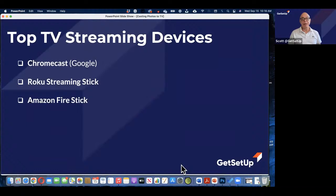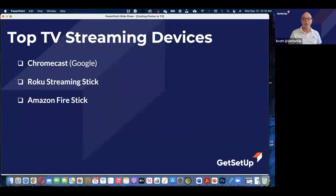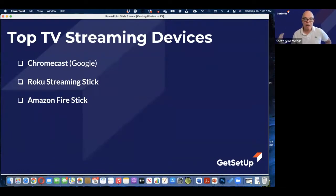Some of the big streaming devices include Chromecast — that's what we have, and it's a Google product. It works with a fairly large number of different platforms. We can cast Prime Video movies and TV shows, Netflix, Disney Plus, and others. The only one we can't do is Apple TV. Roku Streaming Stick is even more flexible — I don't know that it works with Apple TV's content, but it works with quite a few others, and Roku was one of the first out of the gate with a product like this.